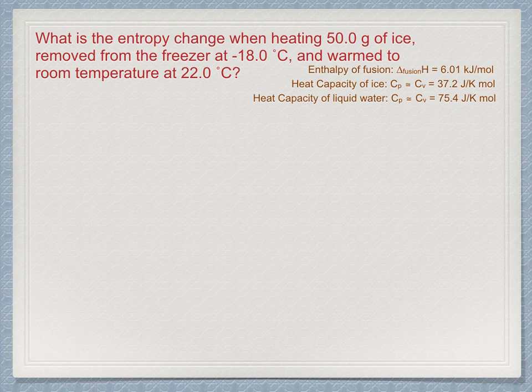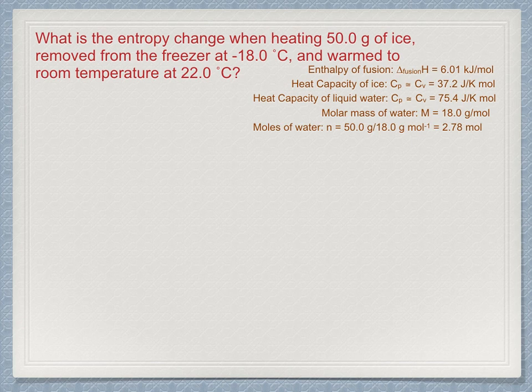With this data we can find the entropy change for the process of heating the ice, melting it to water, and then heating the water. Because these are molar quantities we first need to determine the moles of water involved. Its molar mass is 18 grams per mole so 50 grams is 2.78 moles. Also be careful to use temperature units of Kelvin. The temperature ratio in Celsius is not the same as the ratio in Kelvin and will give the wrong answer. We have minus 18 Celsius equals 255 Kelvin and 22 Celsius equals 295 Kelvin.